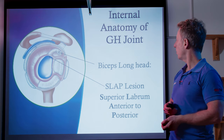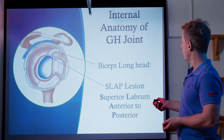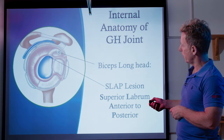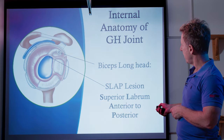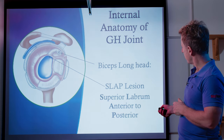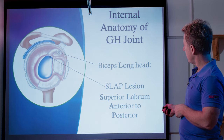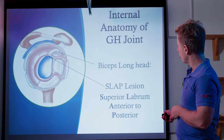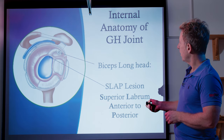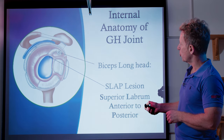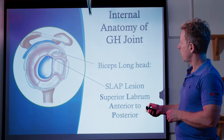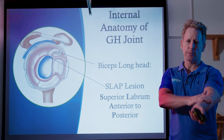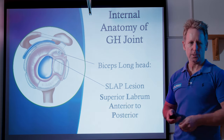Inside the glenohumeral joint, this is where the bicep long head attaches to the supraglenoid tubercle. If it tears around here, that's four grades — they call it a SLAP lesion, which stands for Superior Labrum Anterior to Posterior. Grade two is the most common, where the tendon attaches to the labrum and becomes torn. The pain is deep, deep in the shoulder — a Speed's test might pick it up.